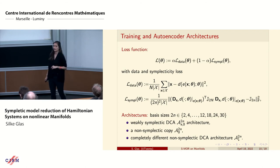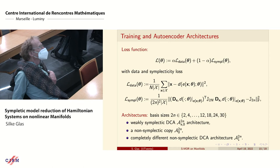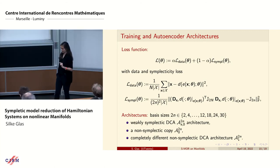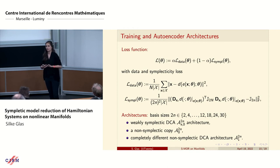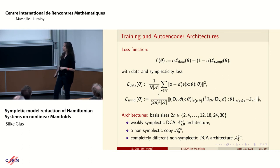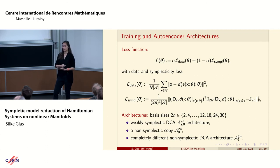For the training and auto-encoder architecture, we have a data loss for the high-dimensional system data with a normalizing constant weighted by 1/α, and a symplectic component where we try to learn symplecticity point-wise. We compare our method to linear methods — to break the Kolmogorov N-width — and also to a non-symplectic copy using the same parameters but with α set to 1 so the symplectic term cancels out, and a completely non-symplectic auto-encoder architecture, to see what structure preservation actually gains us.